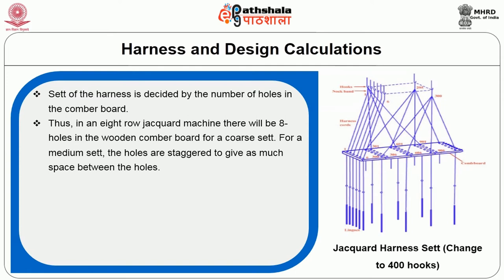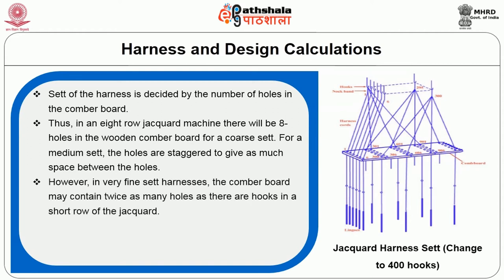An 8-row jacquard machine will have 8 holes in the wooden combo board for a coarse set. For a medium set, the holes are staggered to give much more space between the holes. However, in the case of a fine set harness, the combo boards may contain twice the number of holes as in a regular design.